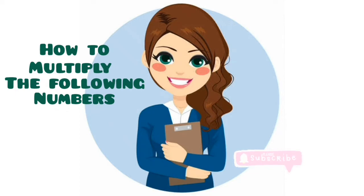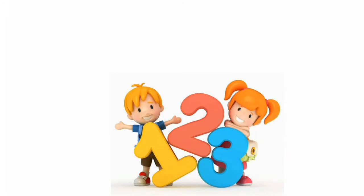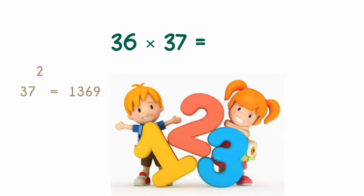The first example is 36 multiplied by 37. The largest number, or we can say the second number, which is 37 — we have to square that number and subtract the same number 37 from it. The answer is 1332.